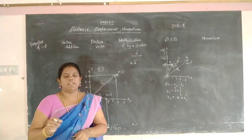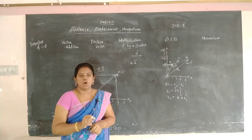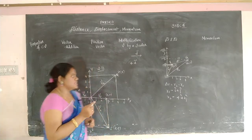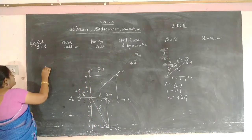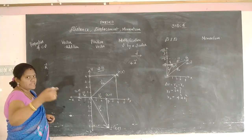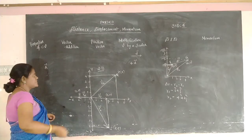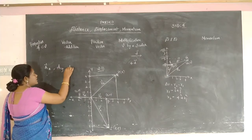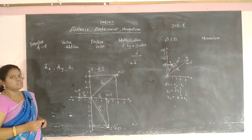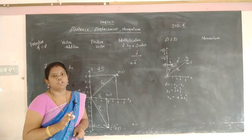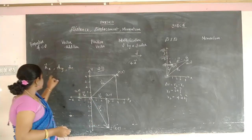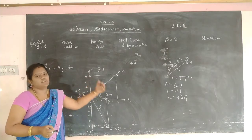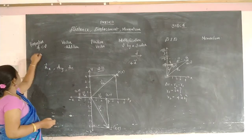Let us enter this topic. First you should know about the properties of components of a vector. A component of a vector simply means you take one vector and mention it in the x-axis, y-axis, and z-axis — that is Ax, the vector in x-axis; vector in y-axis; vector in z-axis — those are all the components of the vector.